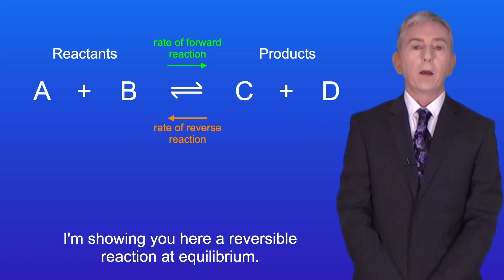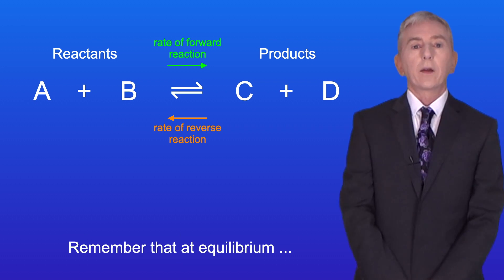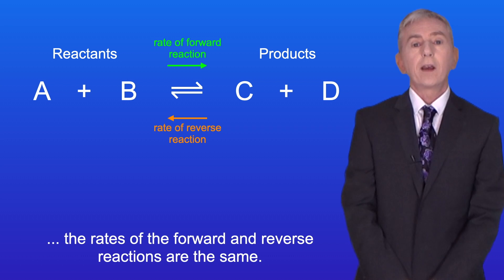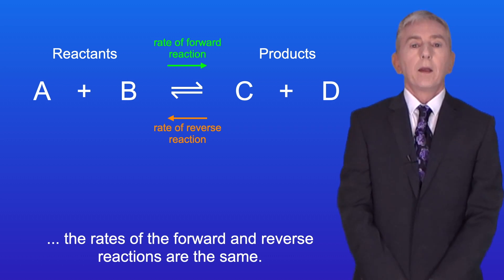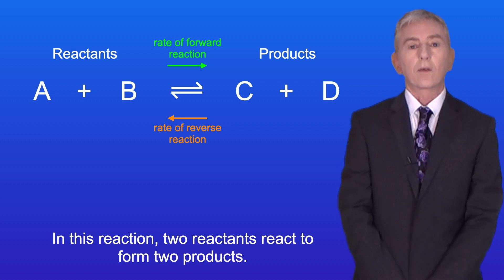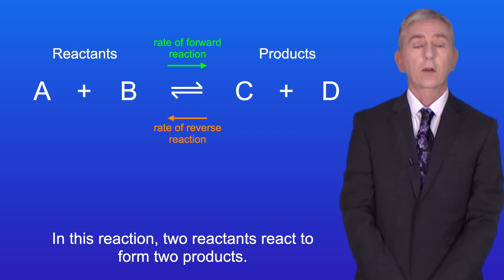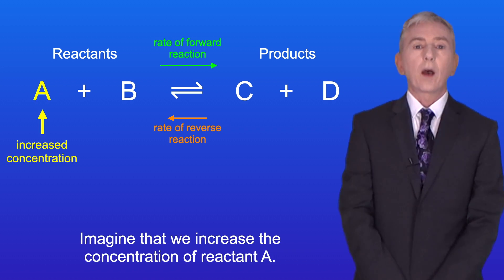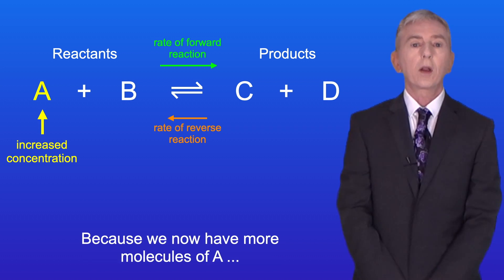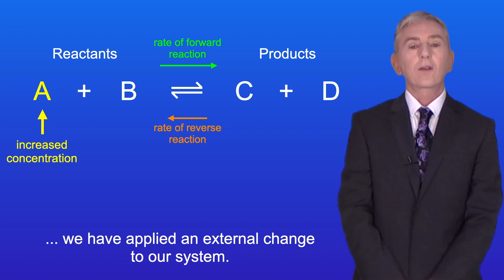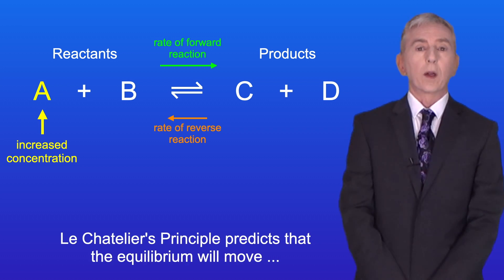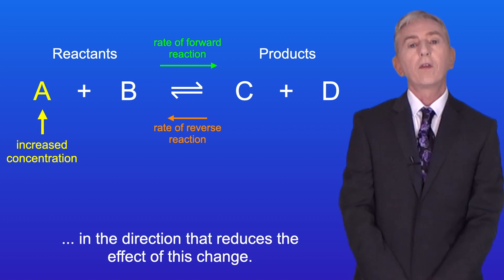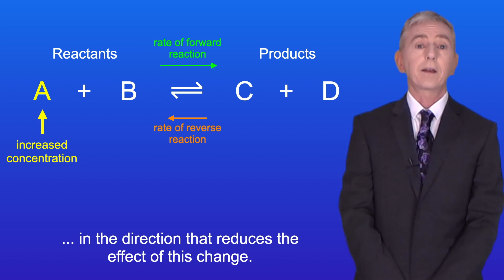Here is a reversible reaction at equilibrium — remember that at equilibrium the rates of the forward and reverse reactions are the same. In this reaction, two reactants react to form two products. Imagine that we increase the concentration of reactant A. Because we now have more molecules of A, we've applied an external change to our system. Le Chatelier's principle predicts that the equilibrium will move in the direction that reduces the effect of this change.